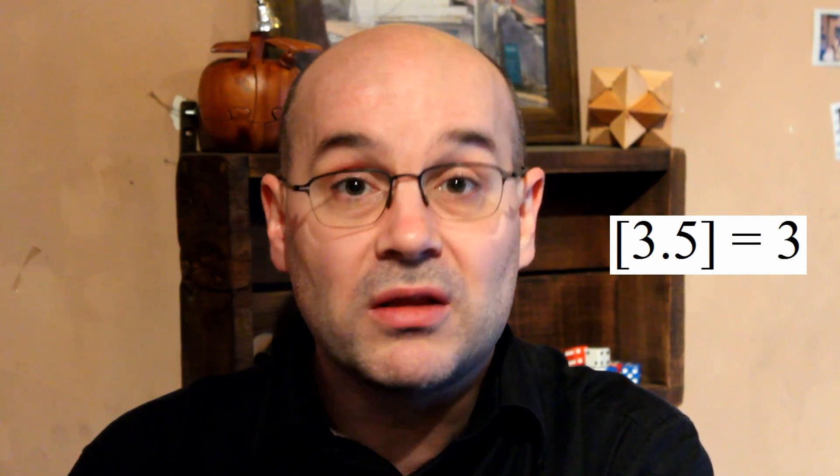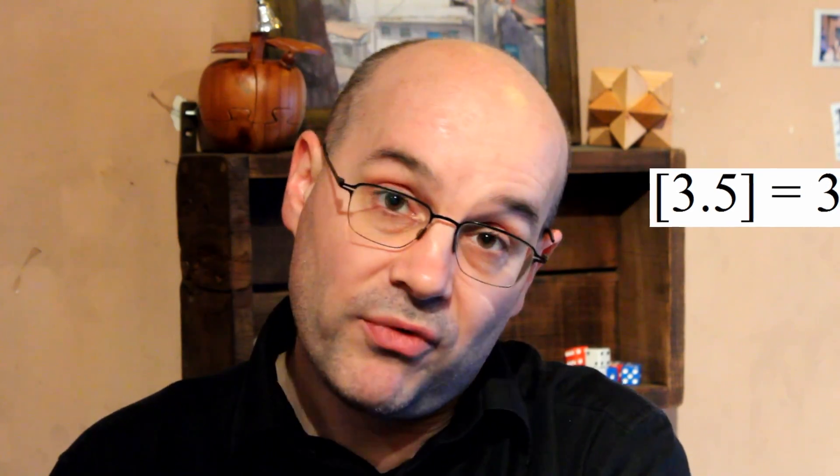So what is the floor function? The floor function is very simple: if you have 3.5, you remove all the decimals after the decimal point and you get 3. If you have 3.9, you also get 3. If you have 3.1, you also get 3. If you have exactly 3, you still get 3.